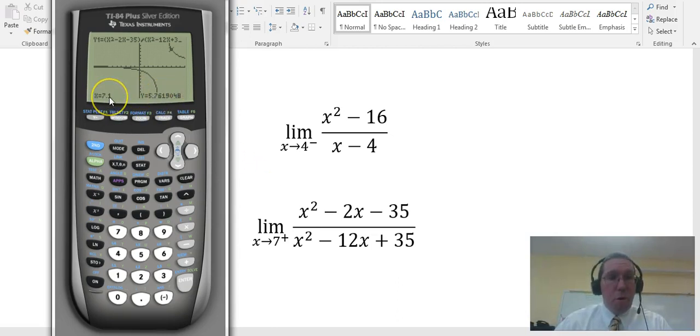All right. Now, let's key in 7.01, so 7.01, enter, and I get 5.97. Maybe I have seen something like this before. So, I went from 5.76, now to 5.97.